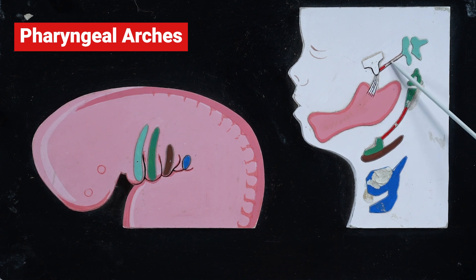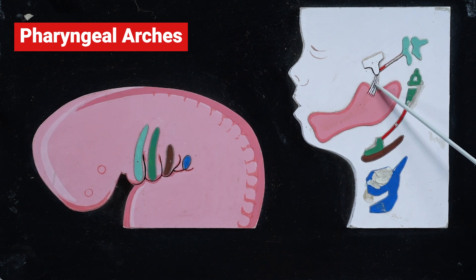These two are very often asked as spotter questions. This is regarding the cartilaginous derivatives of the first pharyngeal arch.